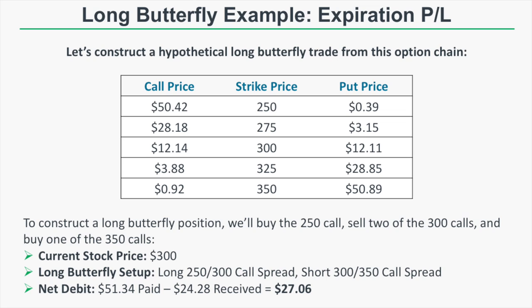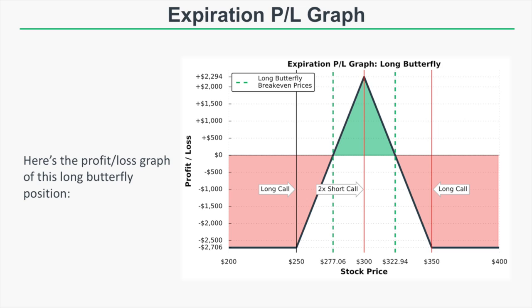Now let's look at a hypothetical long call butterfly from an option chain. For the remainder of this video we'll focus on long call butterflies. In this example, the stock price is currently $300. We'll buy the 250 call, sell two of the 300 calls, and buy one of the 350 calls — essentially buying the 250/300 call spread and selling the 300/350 call spread. That results in a net debit of $27.06. Let's look at the expiration risk profile graph for this position.